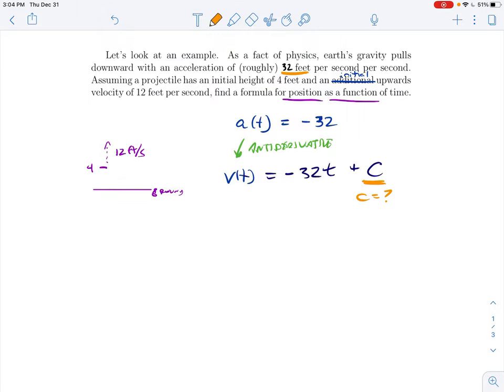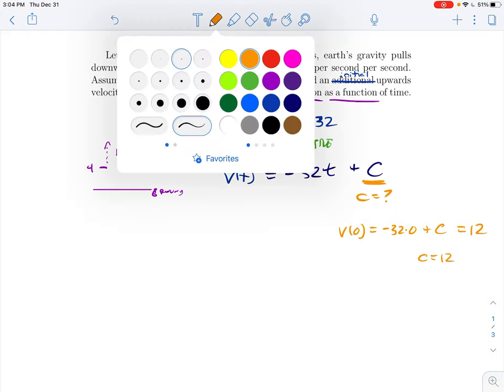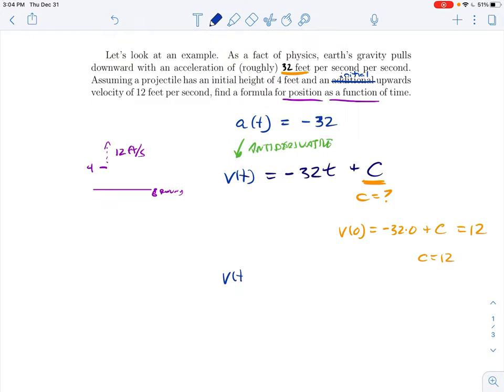But here's where we use that additional information. We know that the initial upwards velocity is 12 feet per second. So one way of expressing that is that the velocity at time zero is equal to 12. But on the other hand, we could plug that into this formula. The velocity at time zero would be negative 32 times zero plus c. And that means that c is equal to 12. So we now know that our velocity function is negative 32t plus 12.